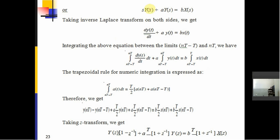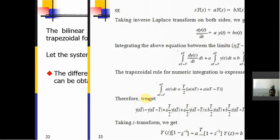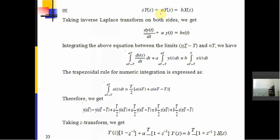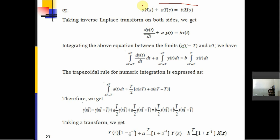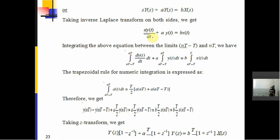Taking the Laplace transform, we get: S·Y(S) + A·Y(S) = B·X(S). Taking the inverse Laplace transform of this equation, we get the differential equation: dY(t)/dt + A·Y(t) = B·X(t).